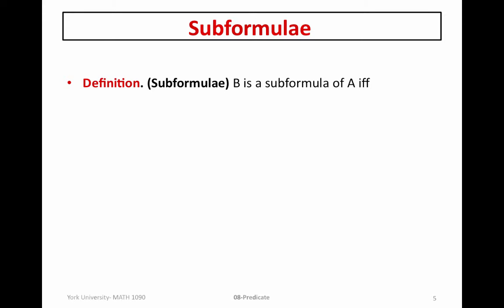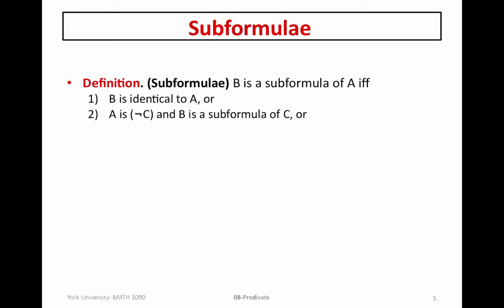Next, we're going to define what a sub-formula of a well-formed formula or first-order formula is. We say that B is a sub-formula of a formula A if B is identical to A, or we look at various other examples and define this recursively. For example, if A has the form not C, then B is a sub-formula of A if it's defined to be a sub-formula of C.